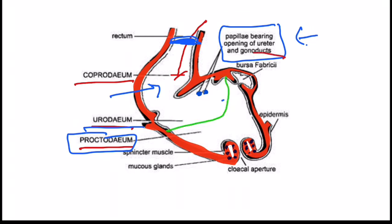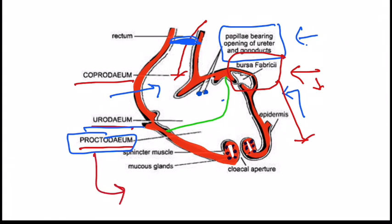On the dorsal wall of the proctodium, the bursa of Fabricius is present — a lymphoid organ that secretes lymphocytes in birds. This bursa of Fabricius is seen only in younger birds, not in mature birds. Once birds become sexually mature, the bursa of Fabricius degenerates. It keeps the organism away from infections in the cloaca region. The proctodium opens outside by the cloacal aperture.